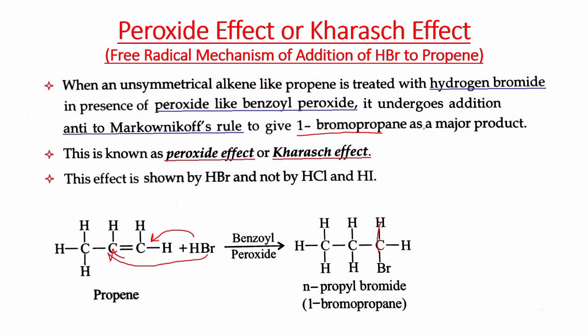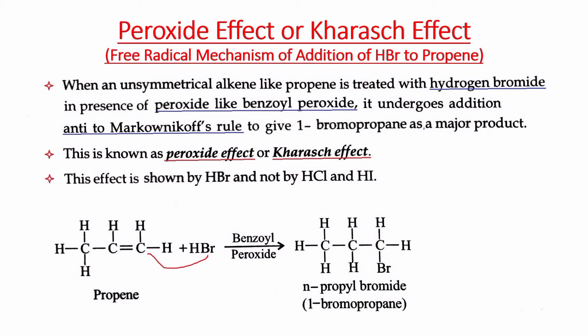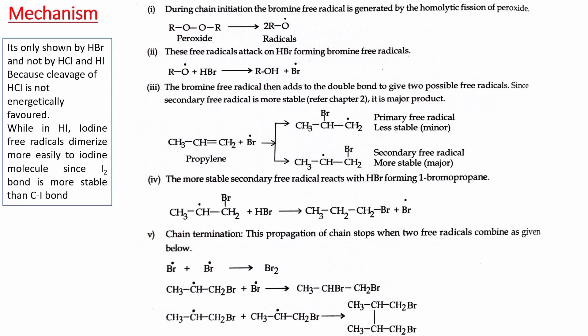When peroxide is added, we get the anti-Markovnikov product. Bromine goes to the carbon having the highest number of hydrogens, and hydrogen goes to the other carbon. The positions are reversed compared to Markovnikov's rule. The product is 1-bromopropane, which is the anti-Markovnikov product.